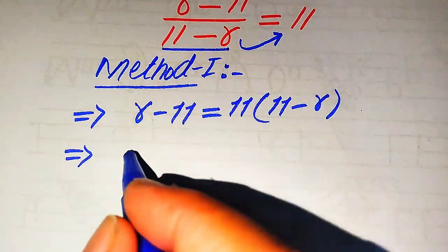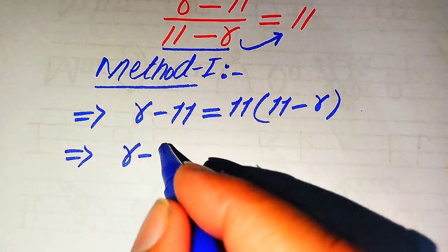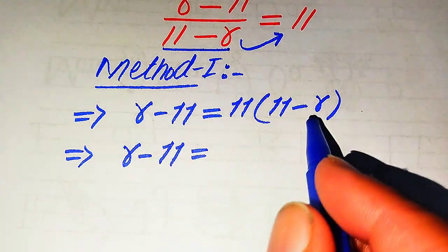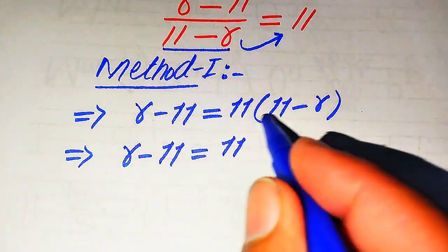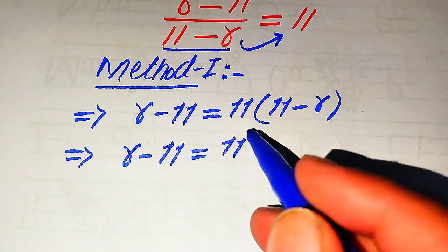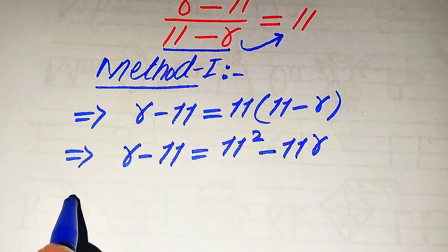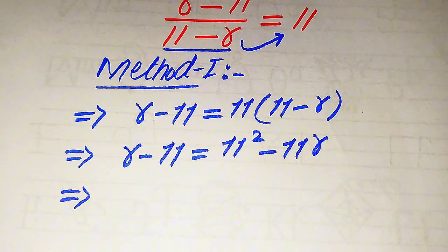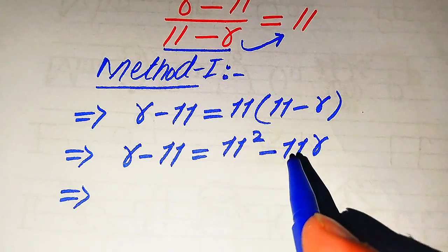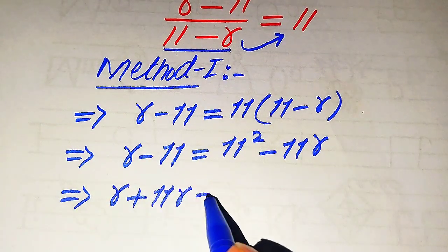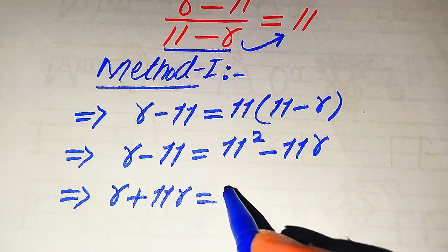Further, we need more simplifications. We multiply 11 separately on both terms, so r minus 11 equals 11 times 11 minus 11 times r, which gives us 11 squared minus 11r. In the next step, we move the variable terms to the left hand side and constant terms to the right hand side. So minus 11r moves from the right to the left, becoming plus 11r, and minus 11 moves to the right becoming plus 11.